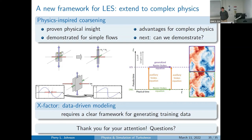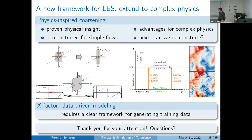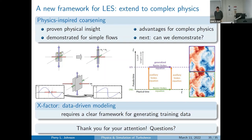Question: Could quantum computing speed this up — DNS or LES? Answer: Quantum computing is gaining interest with increasingly capable machines being built, but I'm fairly skeptical for fluid flows. Quantum computing algorithms tend to work well for linear problems, and there's a big open question about handling nonlinear problems. Fluid flow is intrinsically nonlinear due to the advection term. There are big problems to solve before quantum computing can tackle turbulence, though the reward would be substantial.